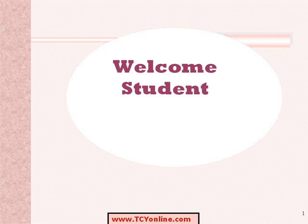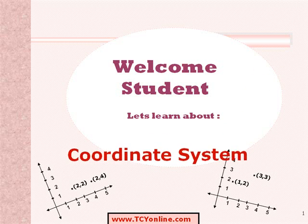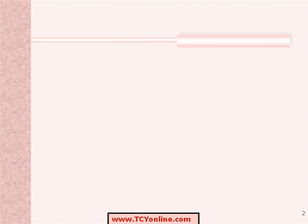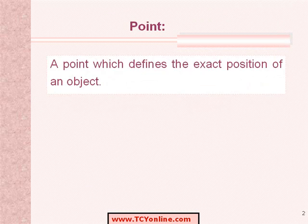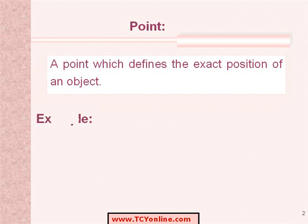Welcome, student. Today we are going to learn about the coordinate system. We are going to begin with the very basic concept of a point. A point, as we all know, defines the exact position of an object. For example, A, B, and C are three points.